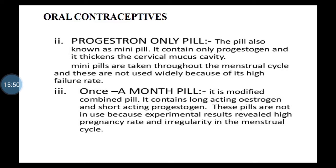Other hormonal contraceptive preparations include: the progesterone-only pill, also known as the mini pill — it contains only progesterone, thickens cervical mucus to prevent sperm entry, and must be taken throughout the menstrual cycle, but is not widely used due to its high failure rate. Another type is the once-a-month pill — a modified combined pill containing long-acting estrogen and short-acting progesterone — not in use because experimental results revealed high pregnancy rates and menstrual irregularity.